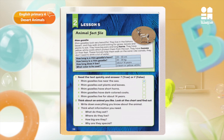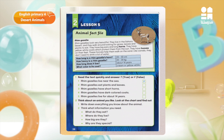Let's look at the table and see the answers to the questions. How long is the rim gazelle's horn? From 20 to 30 cm. How heavy is a rim gazelle? From 20 to 30 kg. How long does it live? About 14 years. What color is its coat? Cream or yellow-white.